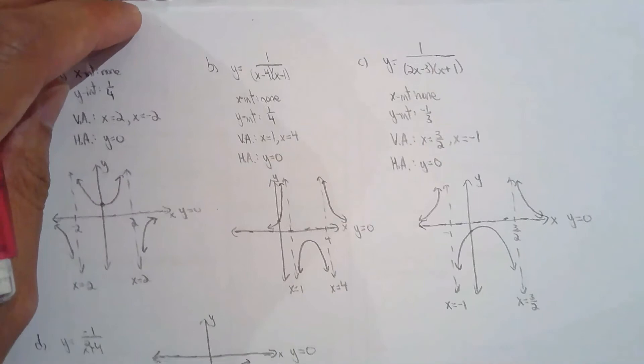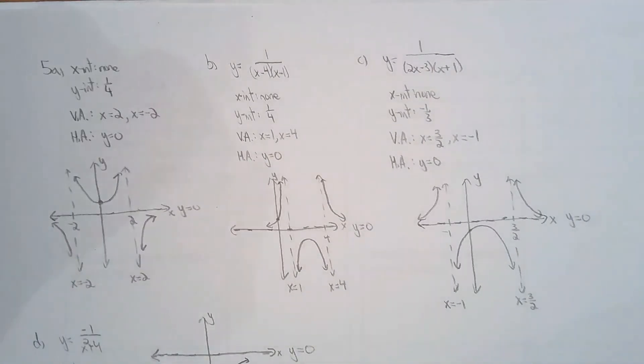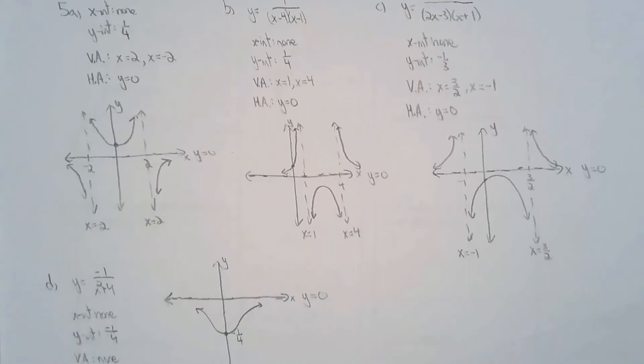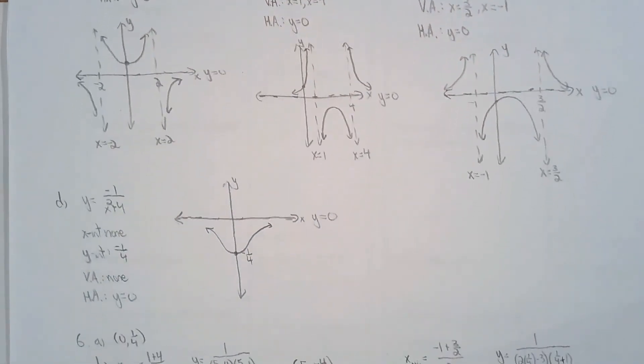For 5, they asked us to sketch each function. So I found the intercepts, the asymptotes, and I pieced it together. So that was all of 5. Find the asymptotes, find the intercepts, and piece it together.